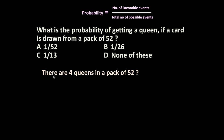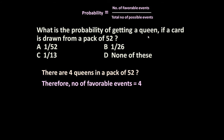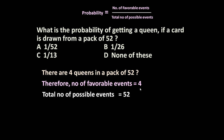In a pack of 52 cards there are four queens. So the number of favorable events is equal to four, because the card we draw must be a queen. The total number of possible events is 52, since there are 52 cards and we are drawing one single card.